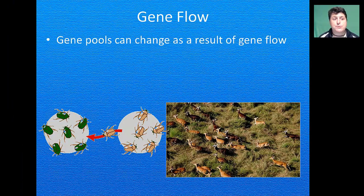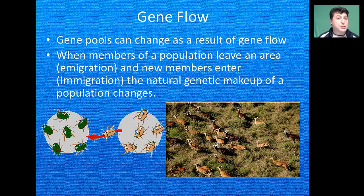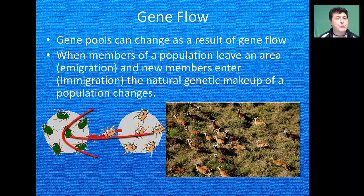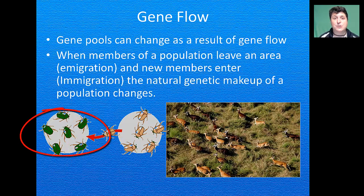Another way that gene pools can change is gene flow. When members of a population leave an area and new members enter, the natural genetic makeup of a population changes. When members of a population leave, this is called emigration — they take their genes with them, which reduces the overall genetic diversity of a population. When new members enter into a group, this is called immigration, and it increases the genetic variation in a population.